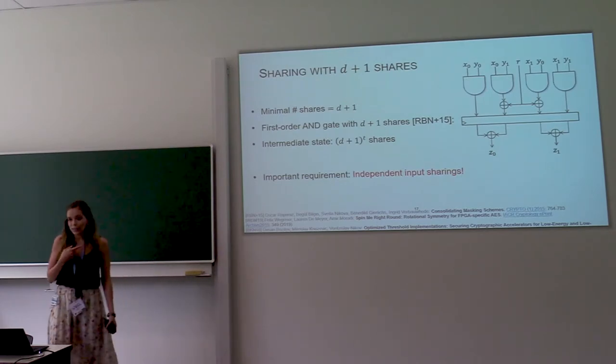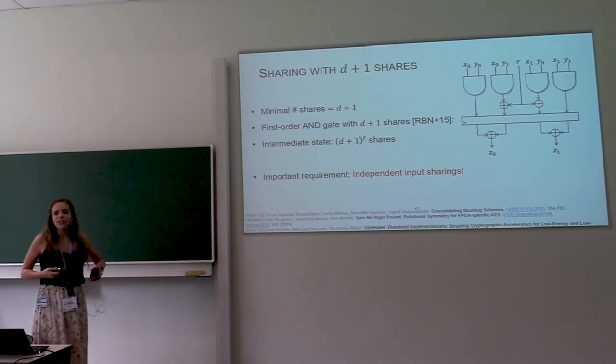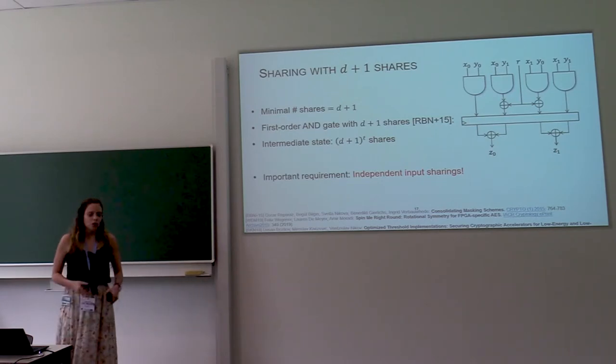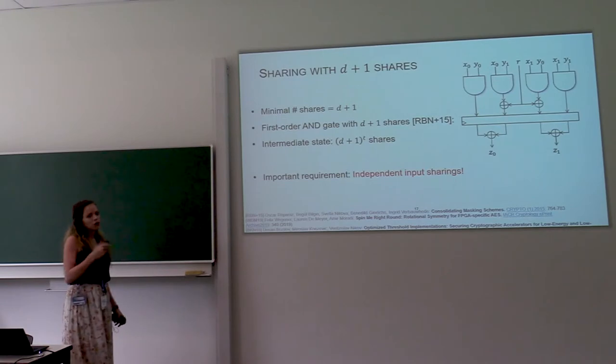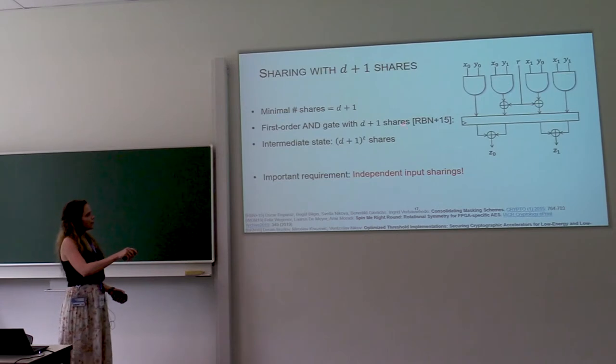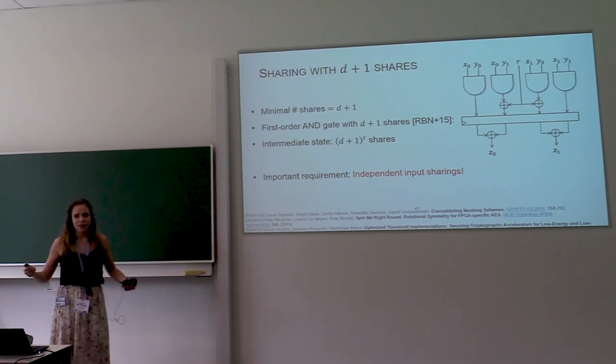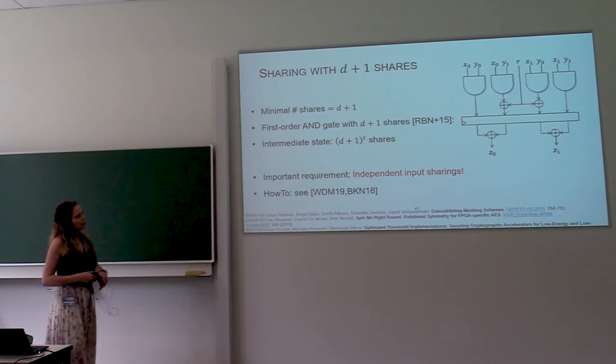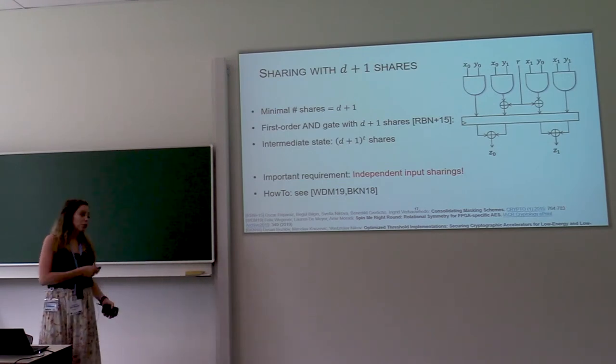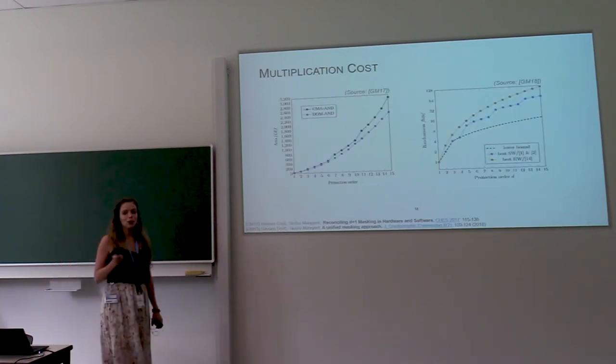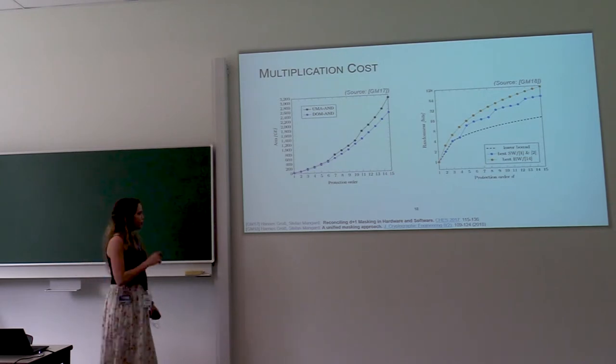And then finally, if you have this masked AND gate, then actually you can mask any circuit. Any circuit can be written as a combination of AND gates and XOR gates. So you could replace any AND gates with this gate and you're done. Except it wouldn't be very efficient because one AND gate just turned into four AND gates. So you can imagine the scale. So for a bit more information on masking more general Boolean functions, if you're interested, I'm going to refer you to these two sources.